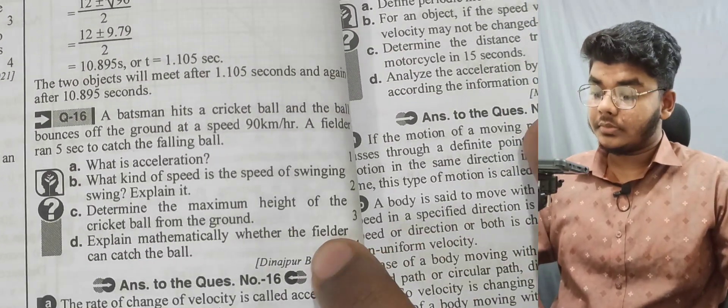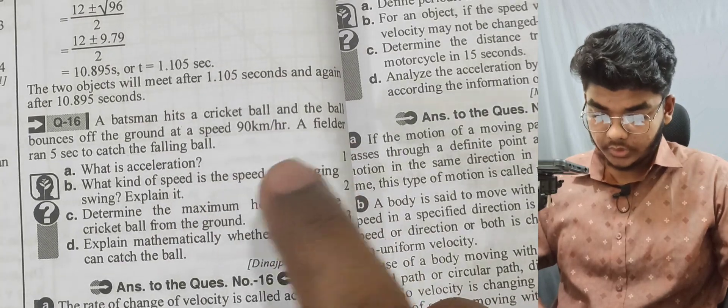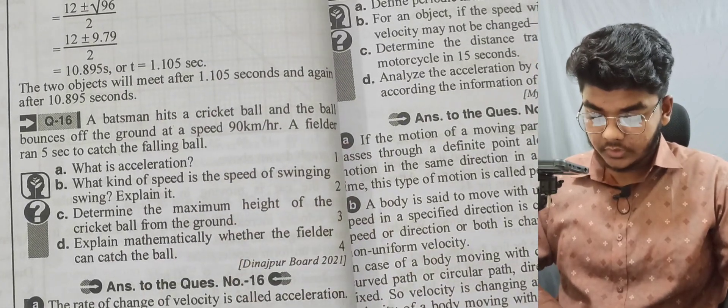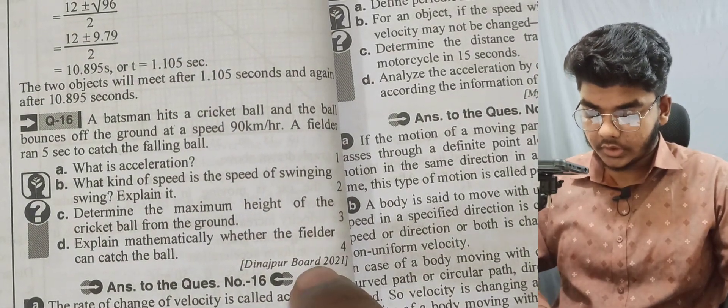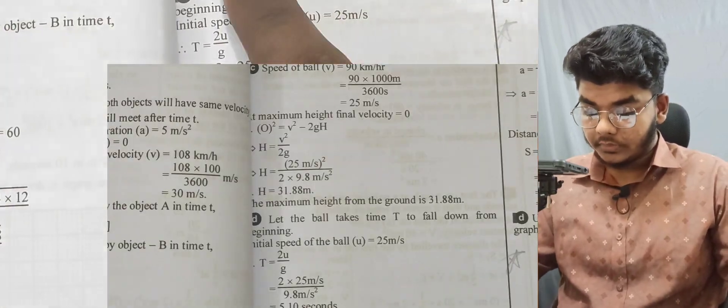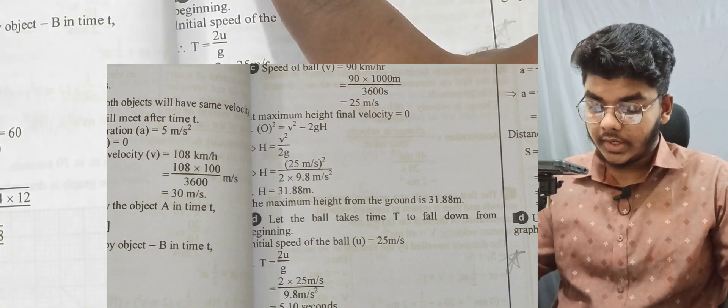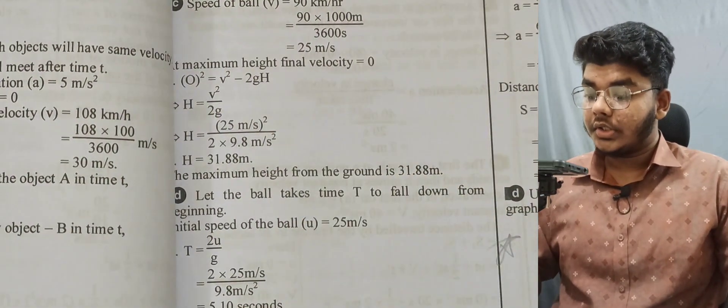Question 16: The batsman hits a cricket ball which bounces off the ground. Determine the maximum height of the cricket ball from the ground. Explain mathematically whether the fielder can catch the ball. Using v² = u² - 2gh since it moves against gravity.